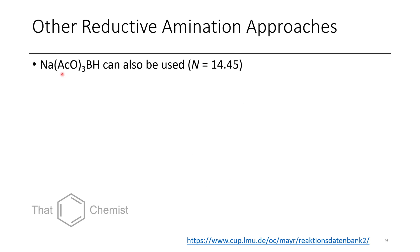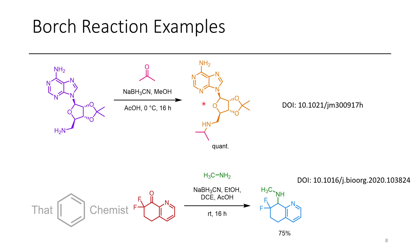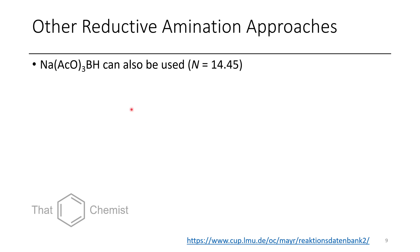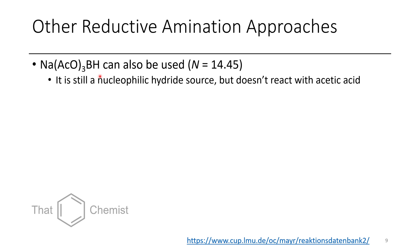If we want to use sodium triacetoxyborohydride, it has a higher N-parameter — essentially the same as sodium borohydride. Industrially this is preferred because reductive aminations usually have an acid present, such as acetic acid, which helps transfer protons and gets iminium formation going more easily. The problem is, if you add acetic acid to sodium borohydride, you'll convert it to mono-, di-, and triacetoxyborohydride. However, the last hydride is not usually reactive enough to react with acetic acid, preventing large-scale reactions from generating a ton of hydrogen gas — a safety and practicality consideration.